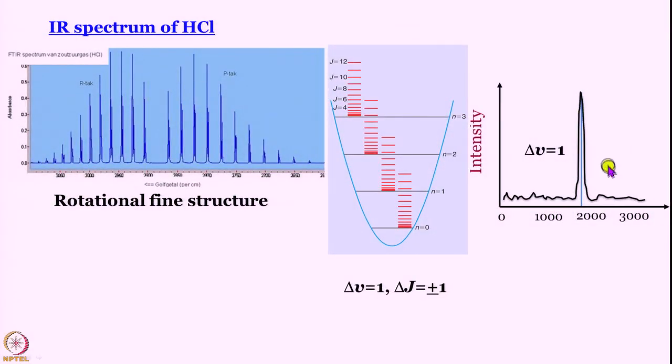As usual, we will not close the discussion without showing you an actual spectrum. This is the expectation, one single line. This is the reality if you use a good enough IR spectrometer, a high resolution IR spectrometer. Instead of one band, you get two branches of lines. Where do these branches arise from? These branches arise from the fact that every vibrational level is associated with rotational levels.